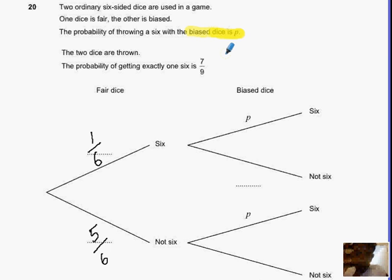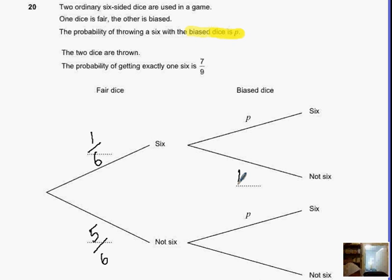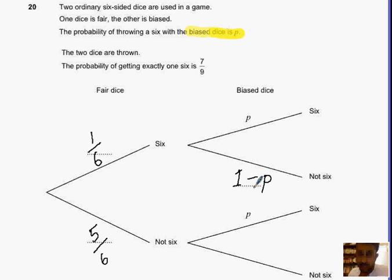We also know for a fact that the total probability of an event adds up to one. So if I want to find the probability of not getting a six on the biased dice, I'm going to do one take away P. Now on the second part of your tree diagram, you're going to have exactly the same thing, so here I'm going to write one minus P as well.